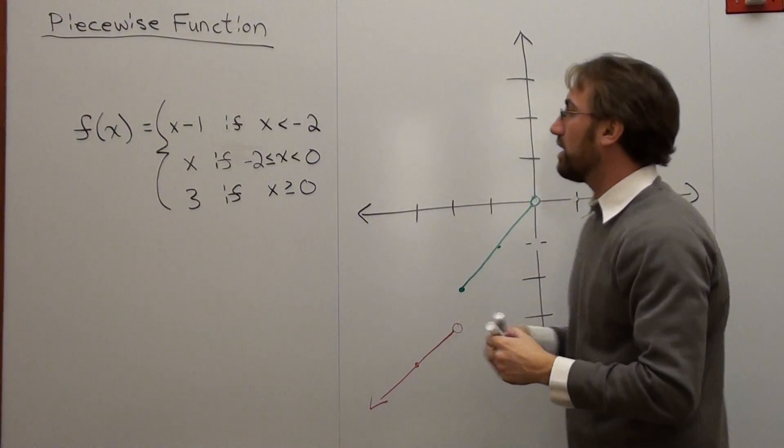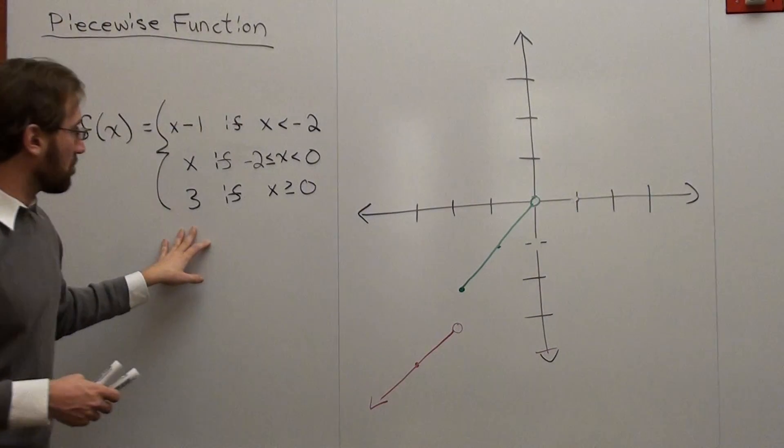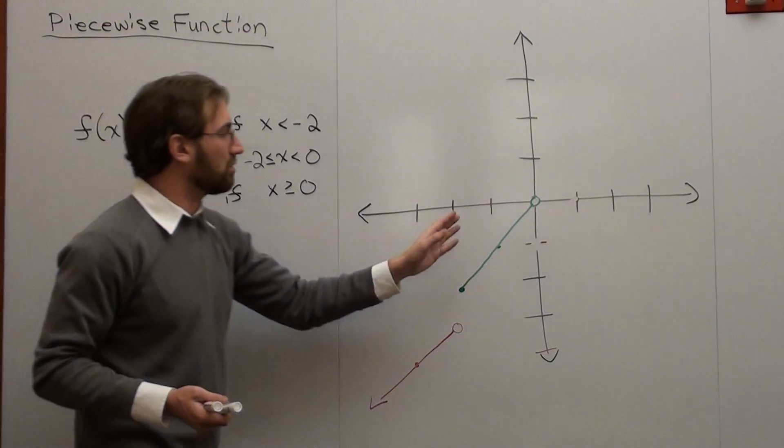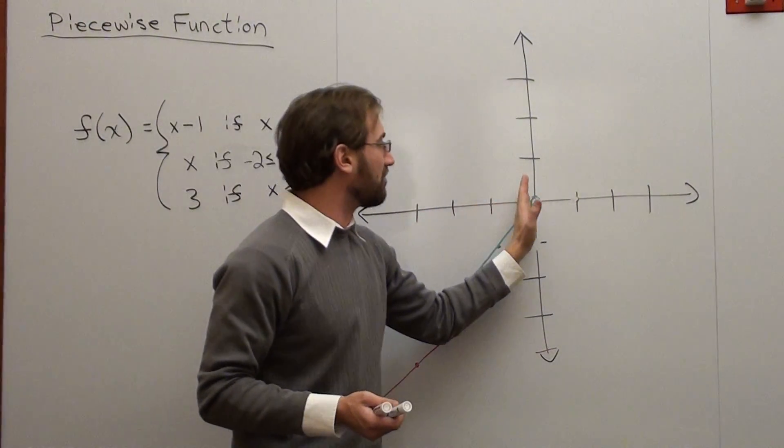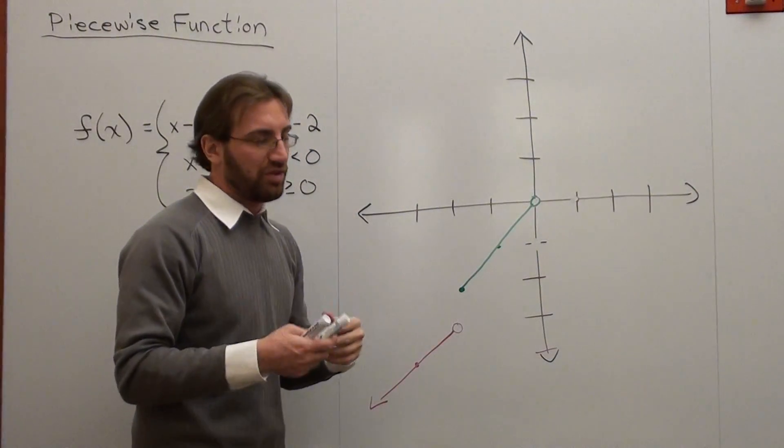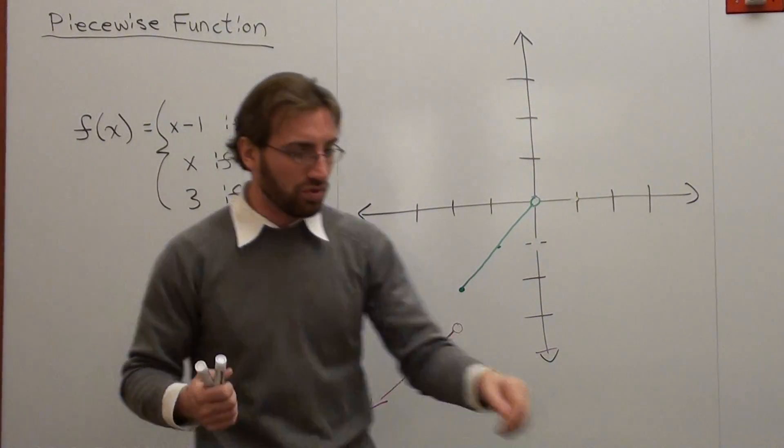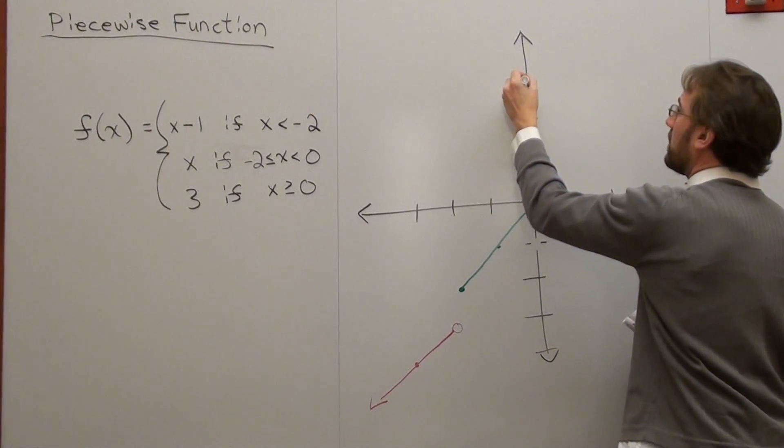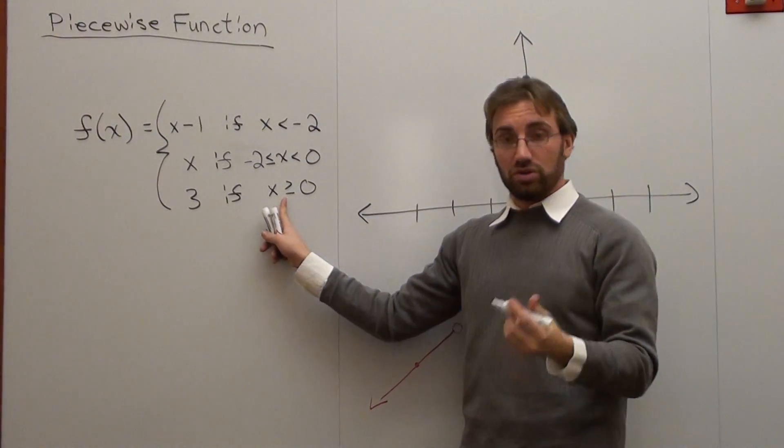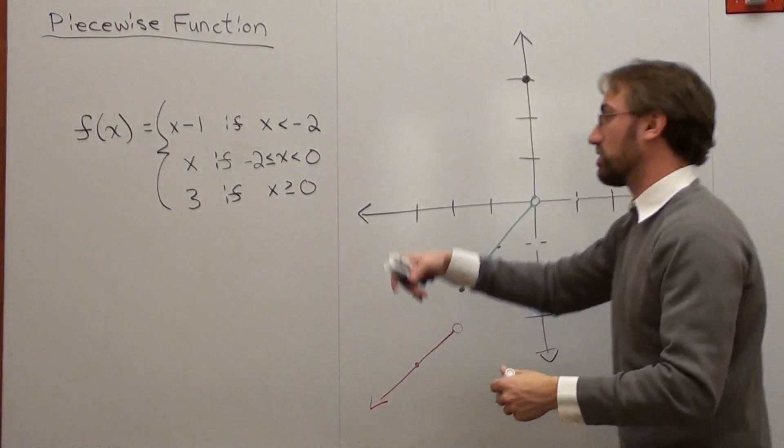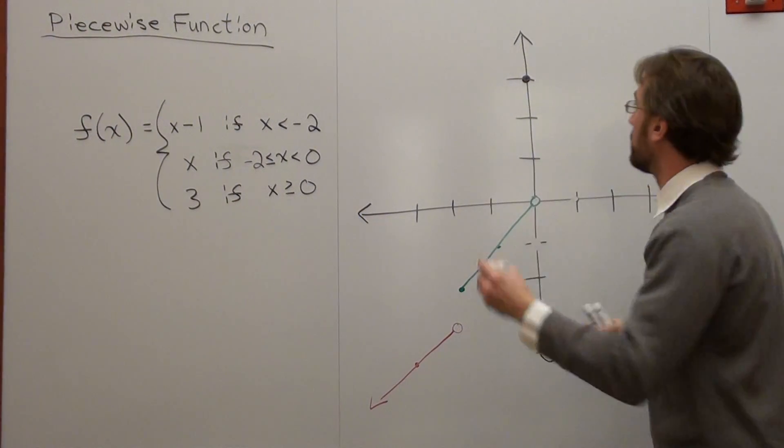And then I want to graph y equals 3 when x is greater than or equal to 0. So basically from here to here, I graph the next function. Well, what does y equals 3 look like? Well, we go up 3, and it's a closed circle because it's got a line underneath, and it just goes on for any value greater than 0.